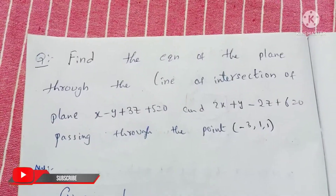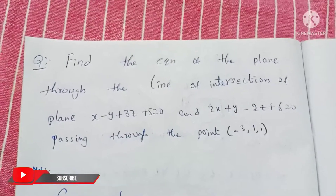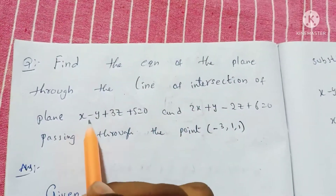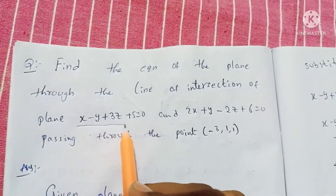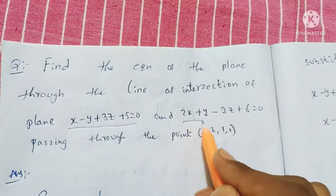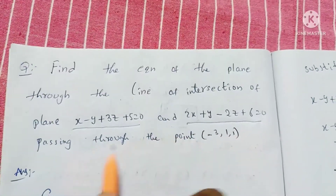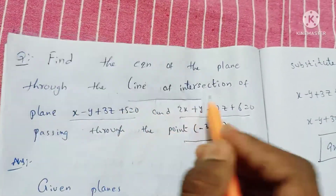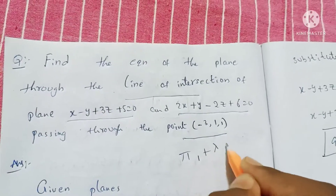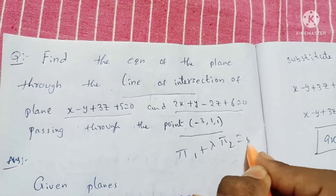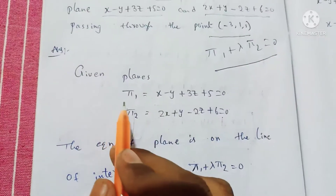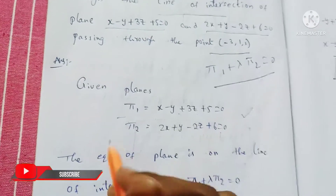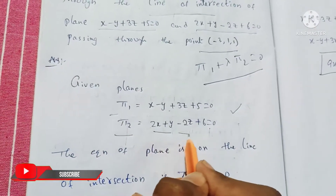Chapter on line of intersection problems. Find the equation of the plane through the line of intersection of plane 1: x minus y plus 3z plus 5 equals 0, and plane 2: 2x plus y minus 2z plus 6 equals 0, passing through the point minus 3, 1, 1.